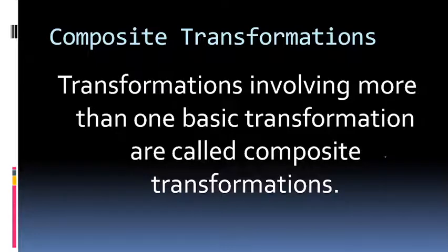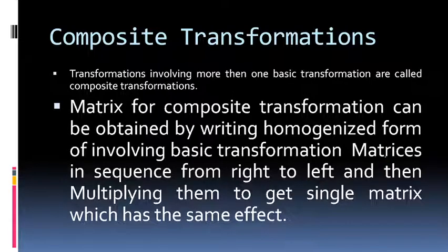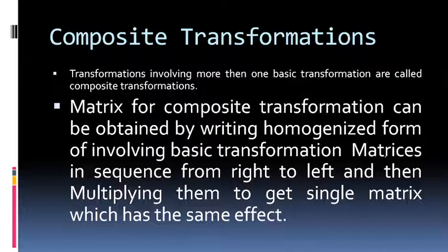If we are to operate it in the form of a matrix, we will get a composite matrix for the composite transformation by writing the matrices for individual transformations in a sequence from right to left. We will see it in great detail.